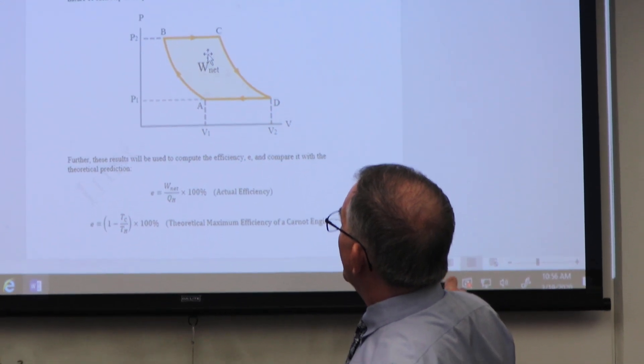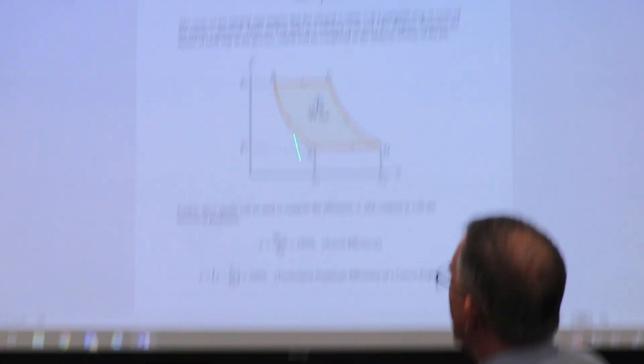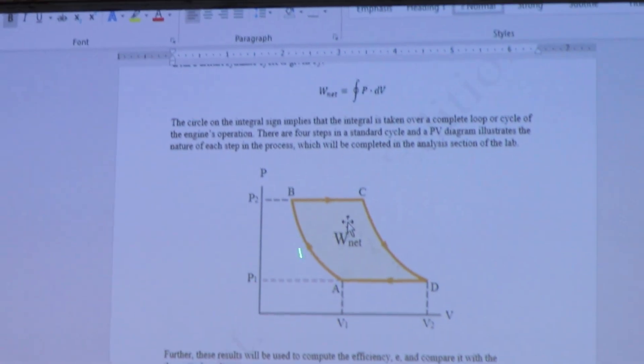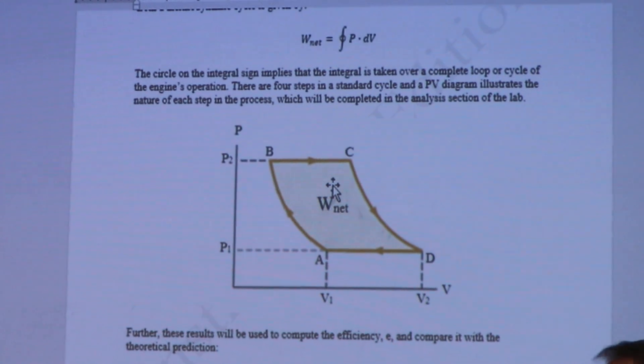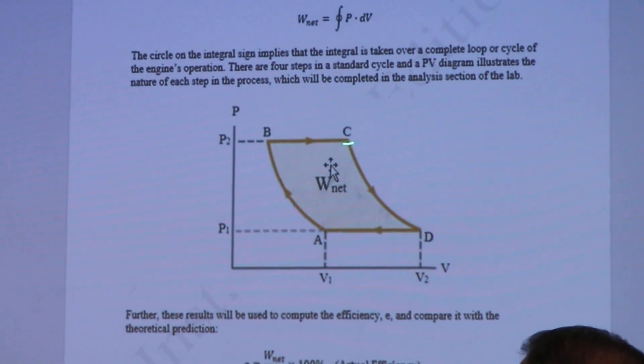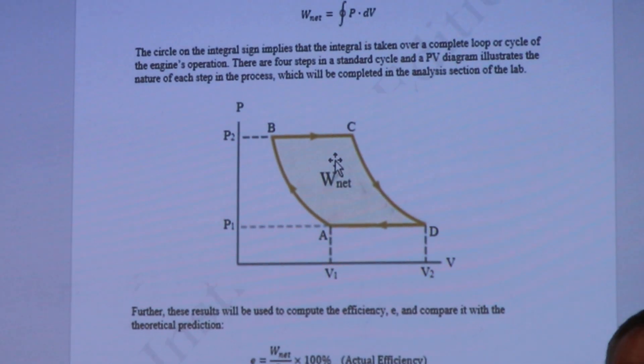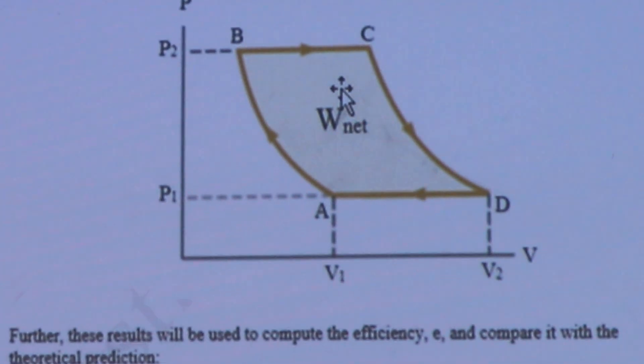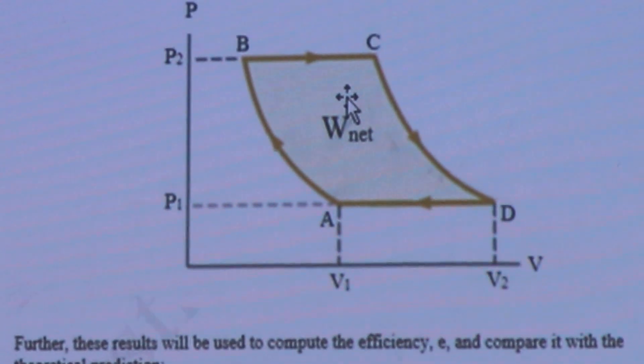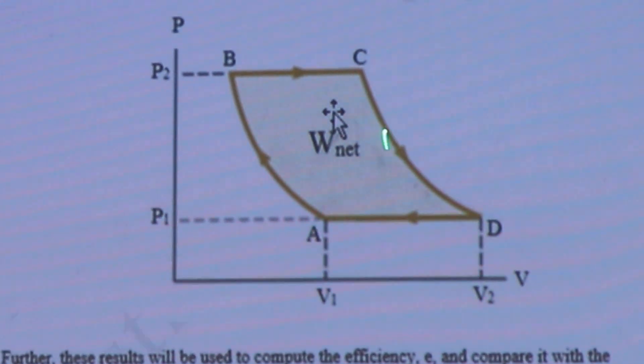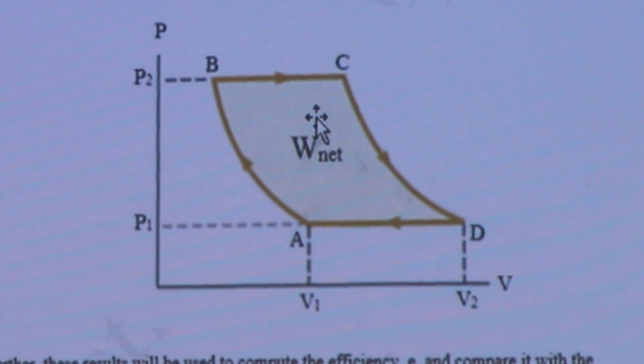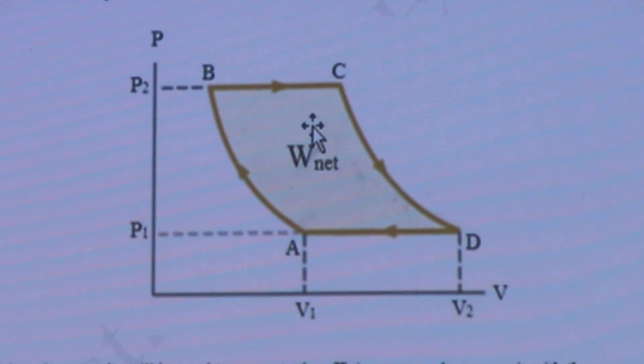And we call that work PV work. So right here, when you do work in a thermodynamic cycle, you have to calculate what the work is in each step of the cycle. So this is actually positive work right here, where the outside world is doing work on the gas. And that area underneath the curve is part of the cycle that's going to lift that mass.